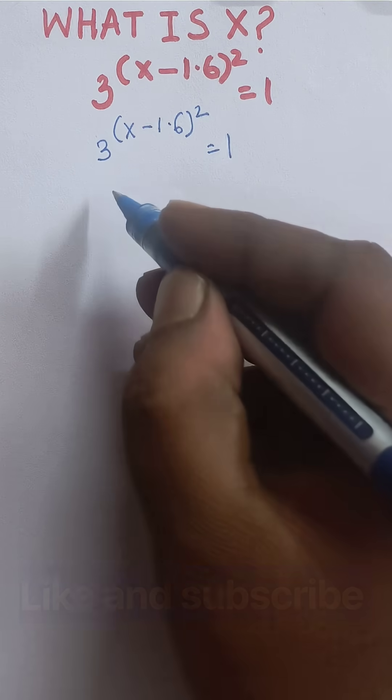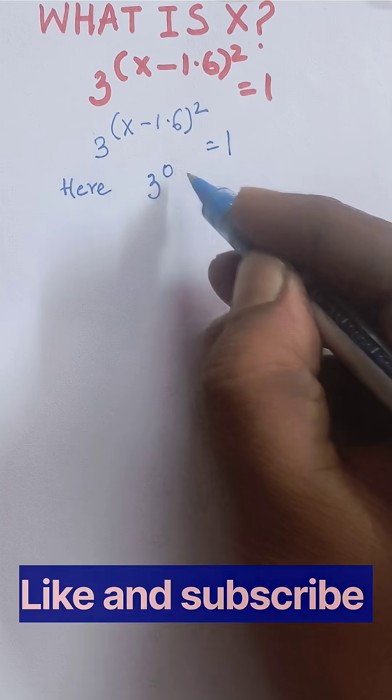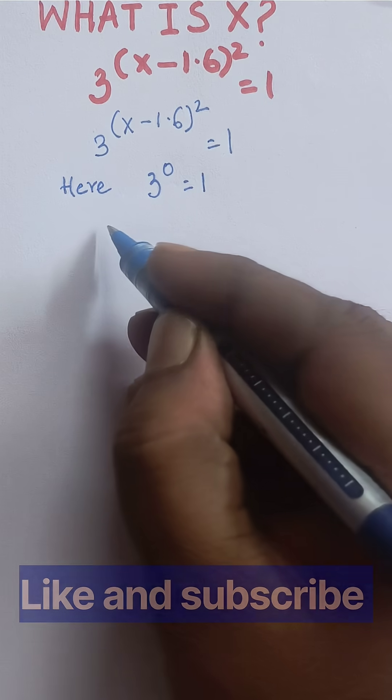See, here we know 3 to the power 0 is equal to 1.